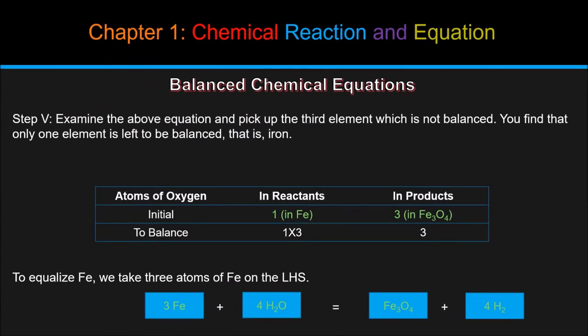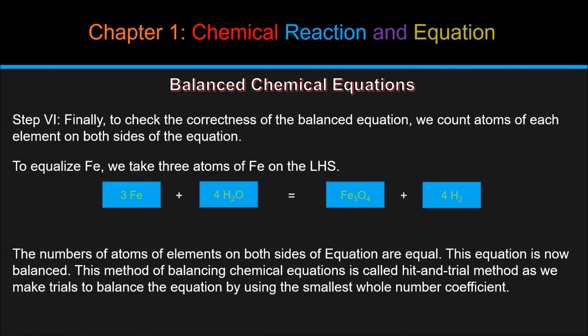Step 5: examine the above equation and pick up the third element which is not balanced. You find that only one element is left to be balanced, that is iron. To equalize Fe, we take 3 atoms of Fe on the LHS. We will get 3Fe plus 4H2O equals Fe3O4 plus 4H2. Step 6: finally, to check the correctness of the balanced equation, count atoms of each element on both sides of the equation. The numbers of atoms of elements on both sides of the equation are equal. This equation is now balanced. This method of balancing chemical equations is called hit and trial method as we make trials to balance the equation by using the smallest whole number coefficient.